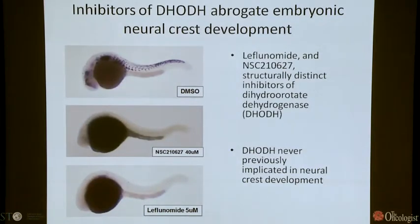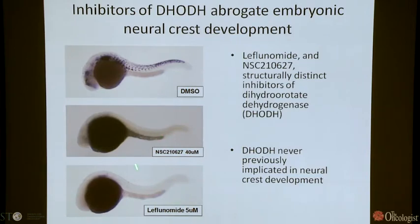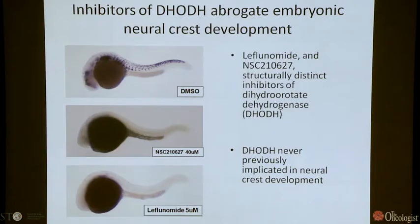We got a number of interesting chemical hits. Two structurally distinct molecules — NSC-210627 and leflunomide — caused an almost complete abrogation of early neural crest expression, with essentially none throughout the trunk of the animal, while the majority of the embryo remained fairly intact. Both of these molecules inhibit an enzyme called dihydroorotate dehydrogenase, DHODH. DHODH had never previously been implicated in neural crest development until fairly recently, when patients with Miller syndrome — a rare craniofacial abnormality with many features of neural crestopathy — were found to have inactivating mutations in DHODH.